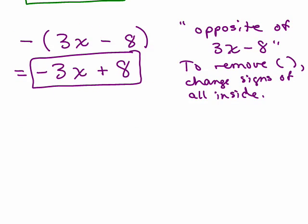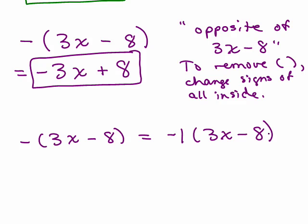Now, what if you wanted to think about it a little bit differently? This minus sign in front, you could think of it as the opposite of 3X minus 8, or you could think of it as negative 1 times 3X minus 8. Actually, taking the opposite of anything is the same thing as multiplying it by a negative 1, you'll get the same answer.